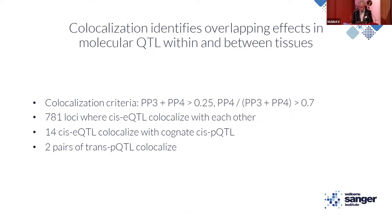We used the co-loc package and performed co-localization in three different ways. We noticed around 1,000 e-SNPs were tagging multiple e-genes, and we found a surprising number of cis-eQTLs that co-localize with each other — evidence for around 781 that co-localize. We also found evidence of cis-eQTL co-localizing with cognate cis-pQTL in 14 cases, and of the six trans-pQTLs, two pairs co-localized with each other.